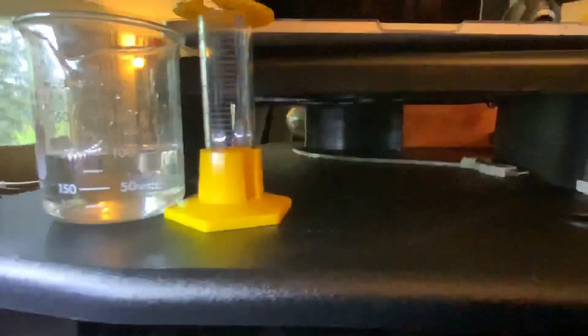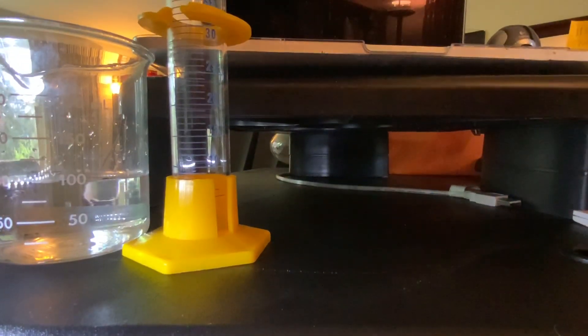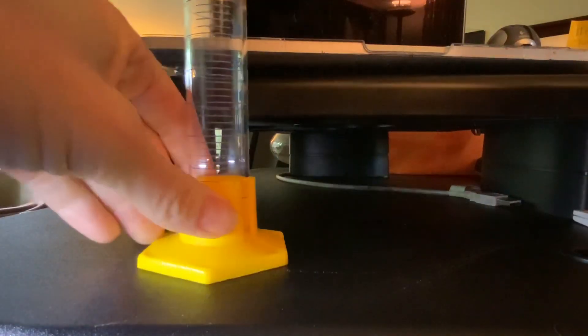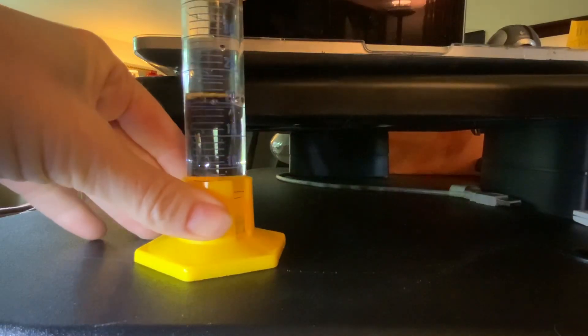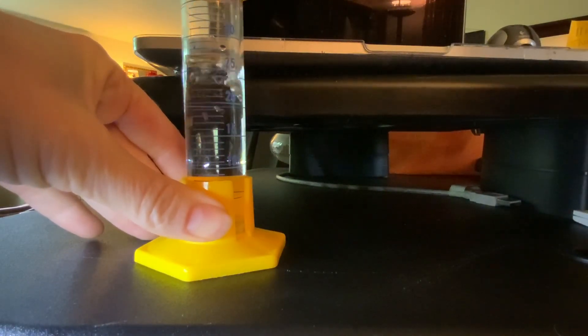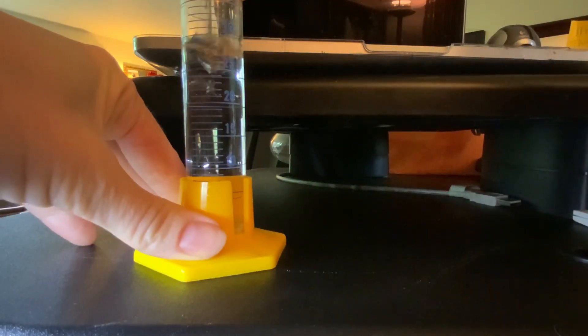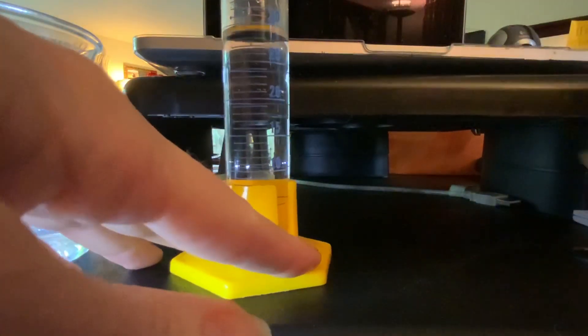Now I'm going to use my 50 milliliter cylinder and add some water to it. Doesn't have to be exactly 30 but some amount that we'll write down precisely. Get rid of a couple of those air bubbles there.